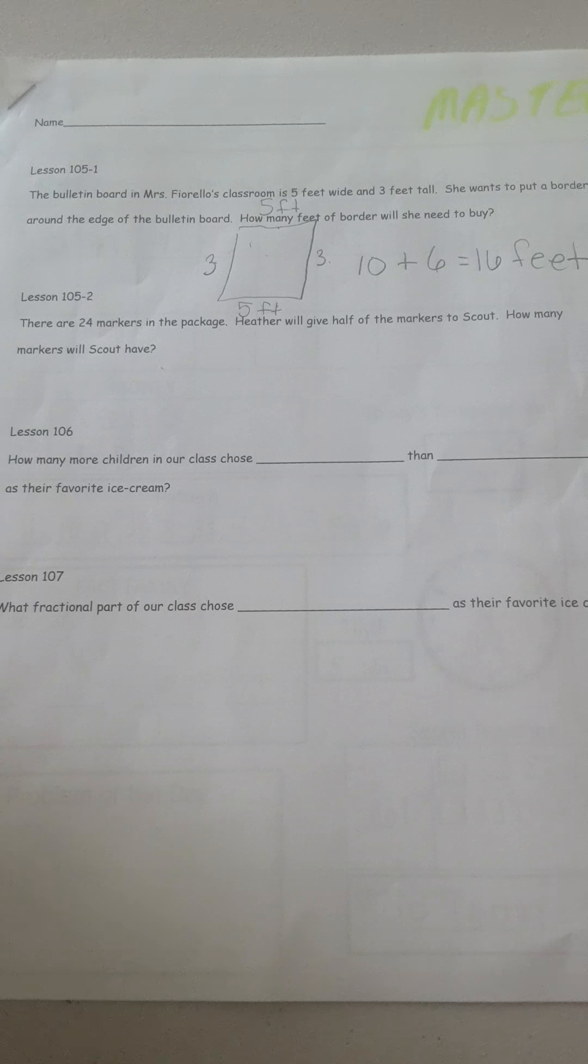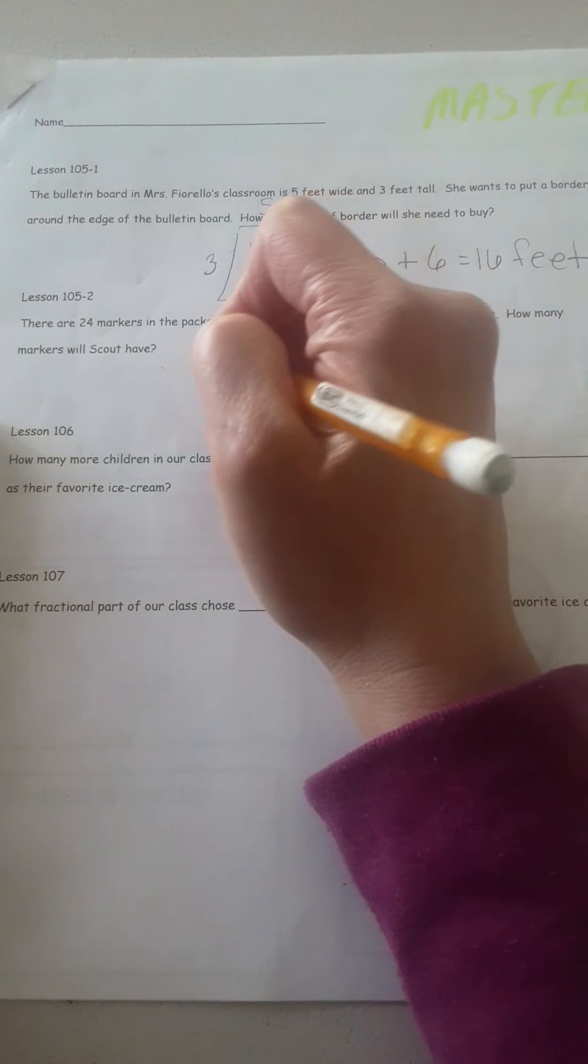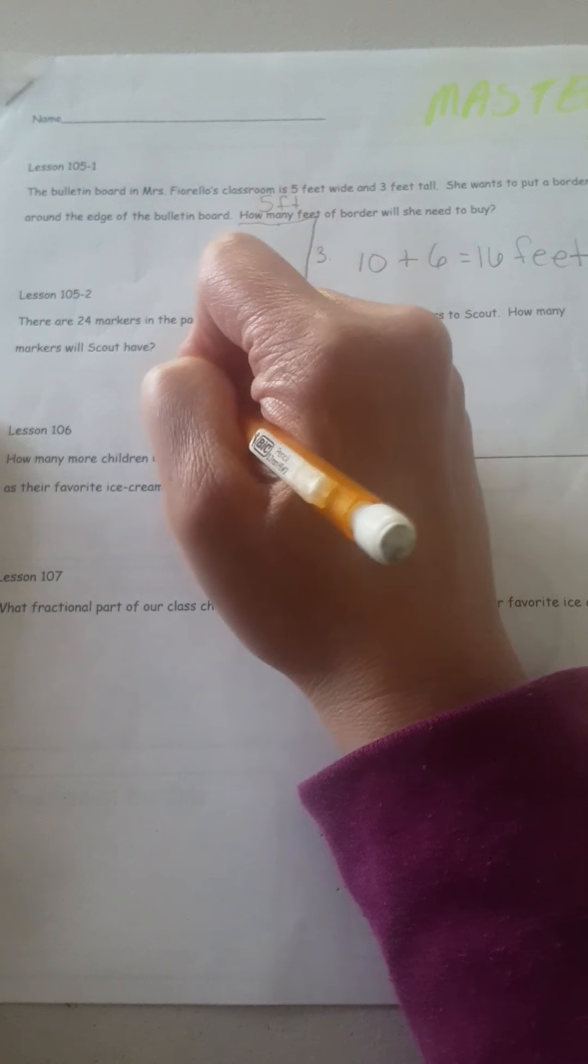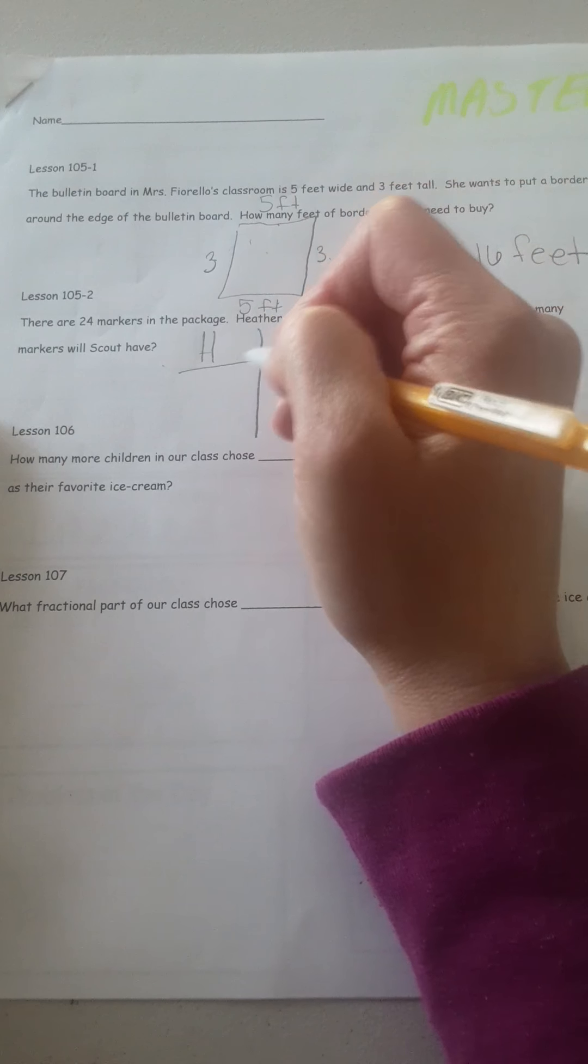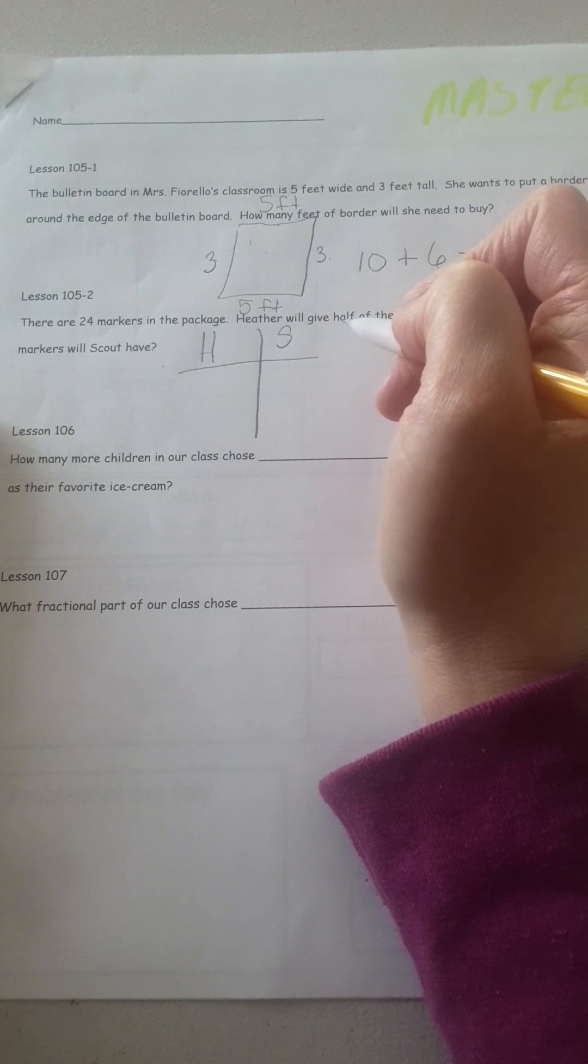All right. Well, you can think half of 24, what half of 24 is, or you could do it this way. You could divide it up, Heather and Scout, and just divide up the markers.